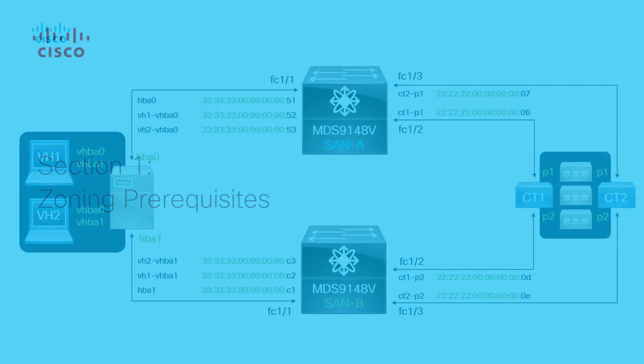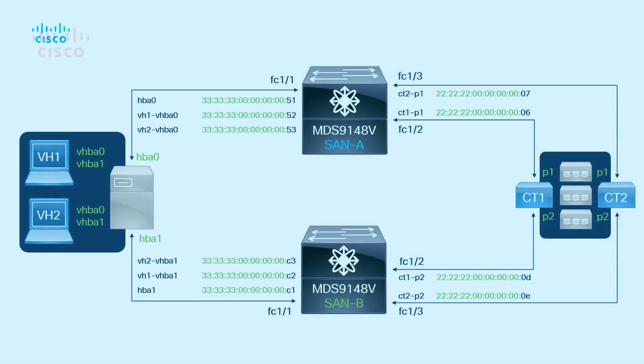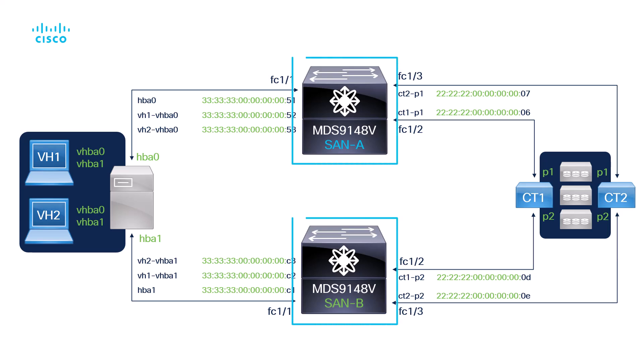Section 1: Zoning Prerequisites. The diagram shows a typical redundant single switch fabric setup, with two physically separate paths, SAN A and SAN B, represented by the two MDS 9148V fabric switches. Because it's a single switch fabric, the term fabric and switch can be used interchangeably.